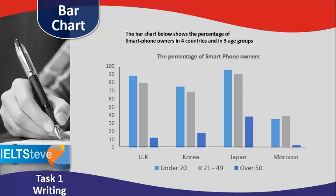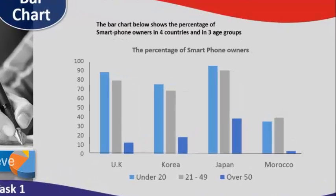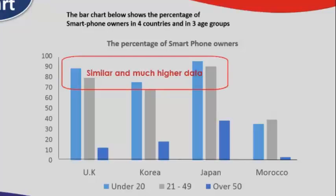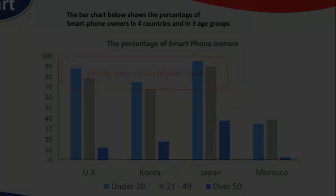If it was comparing time along the bottom axis, yes, we could use 'increase' or 'decrease.' One thing to notice here is the main trend: the under-20 and 21-to-49 age groups are very similar and much higher than the older group across all countries. That trend is more significant than noting, for example, that Japan was the highest. The real trend is that the middle age and younger age groups are using smartphones far more.